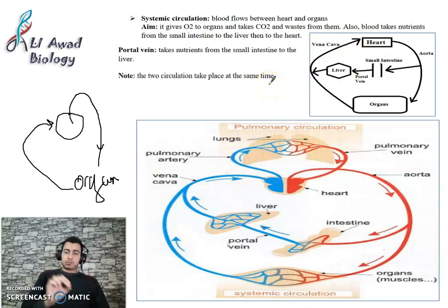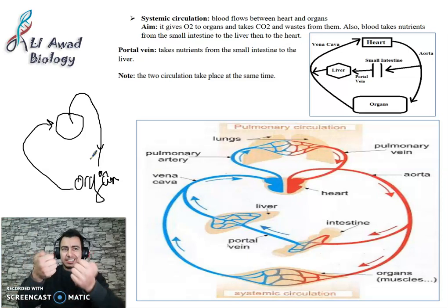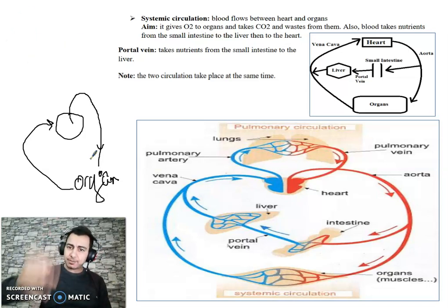The aim of this circulation - this circulation has many objectives. The first aim of this circulation is it gives oxygen to organs and takes carbon dioxide from these organs.